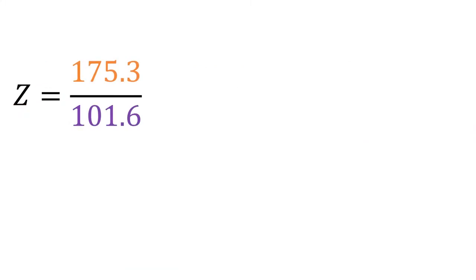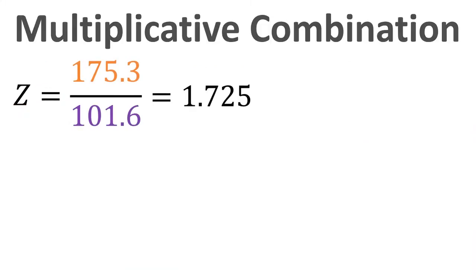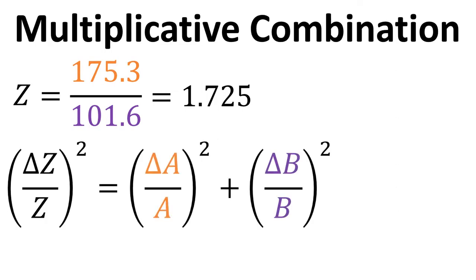So if we put the numbers in, we can work out a value, and we refer to this as a multiplicative combination of two values. And we need this equation for the propagation of uncertainty.